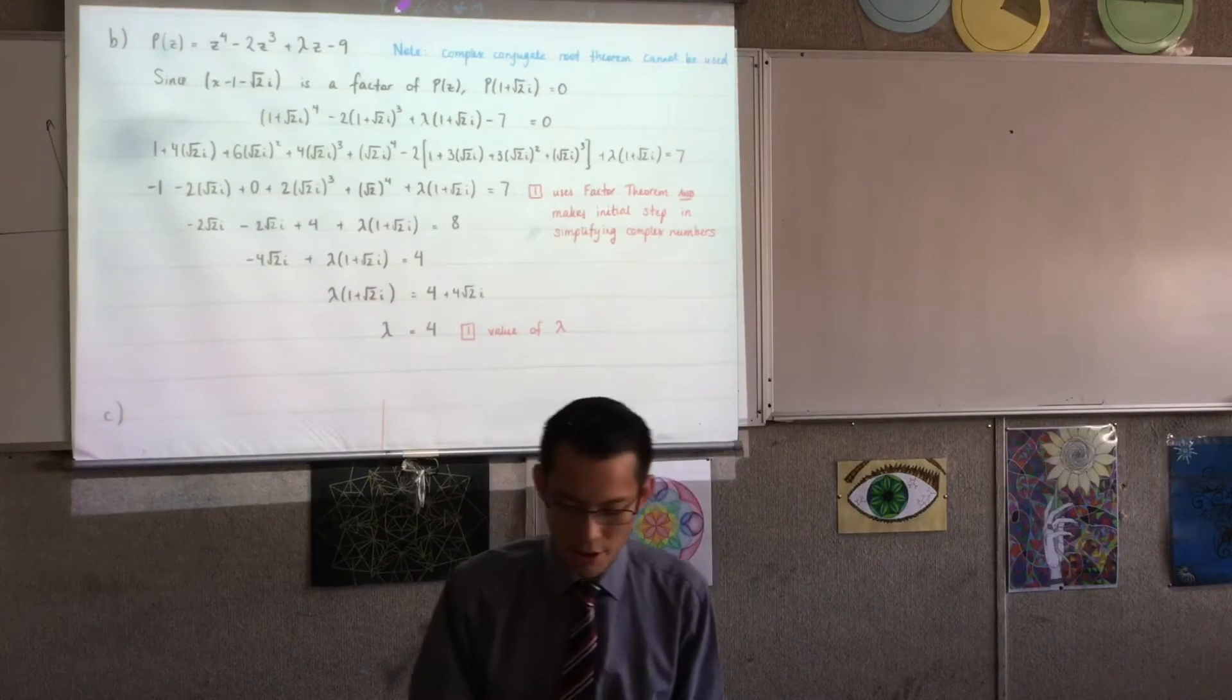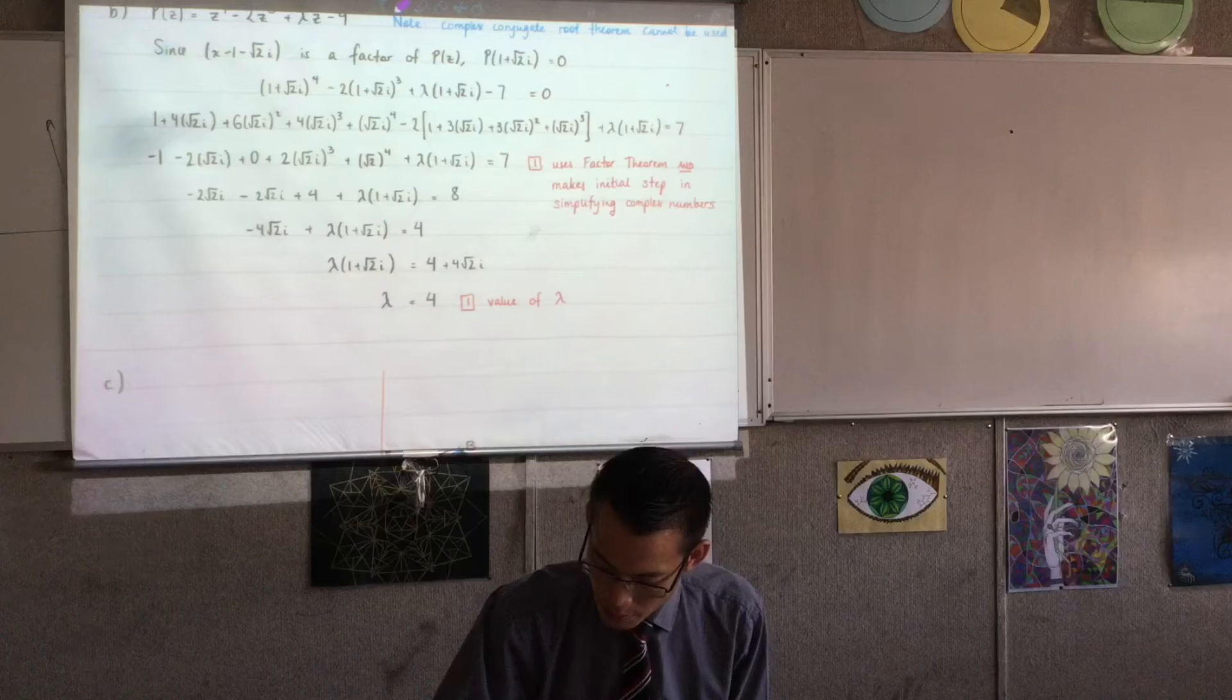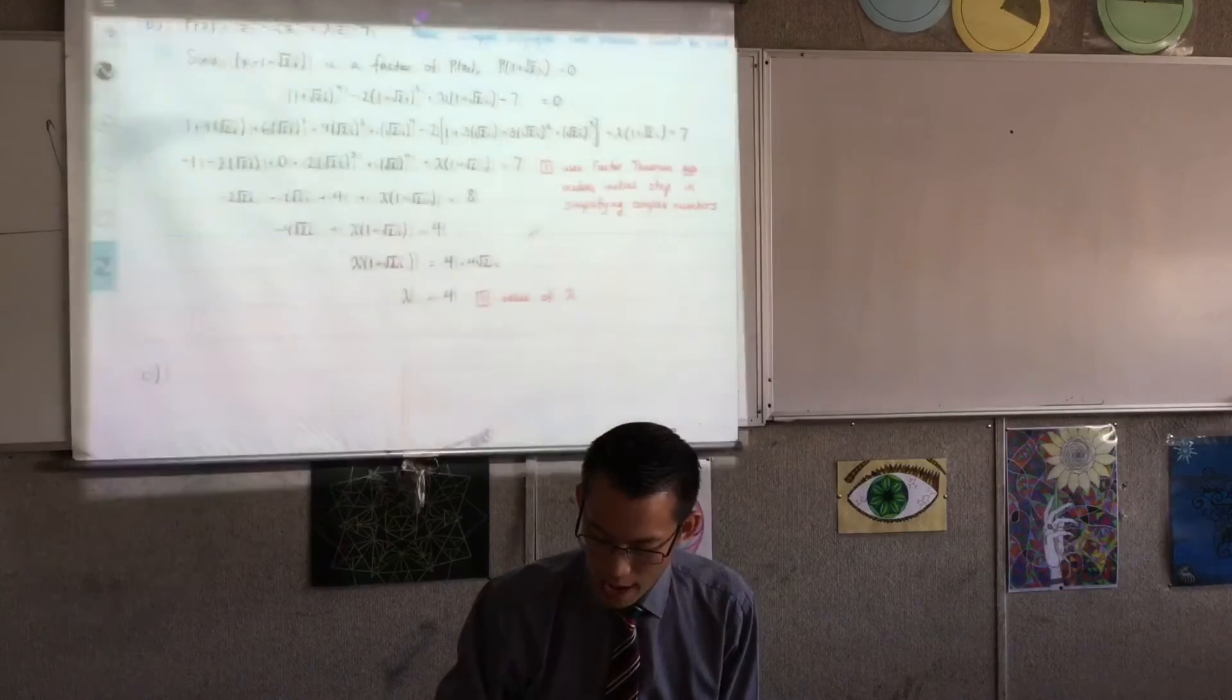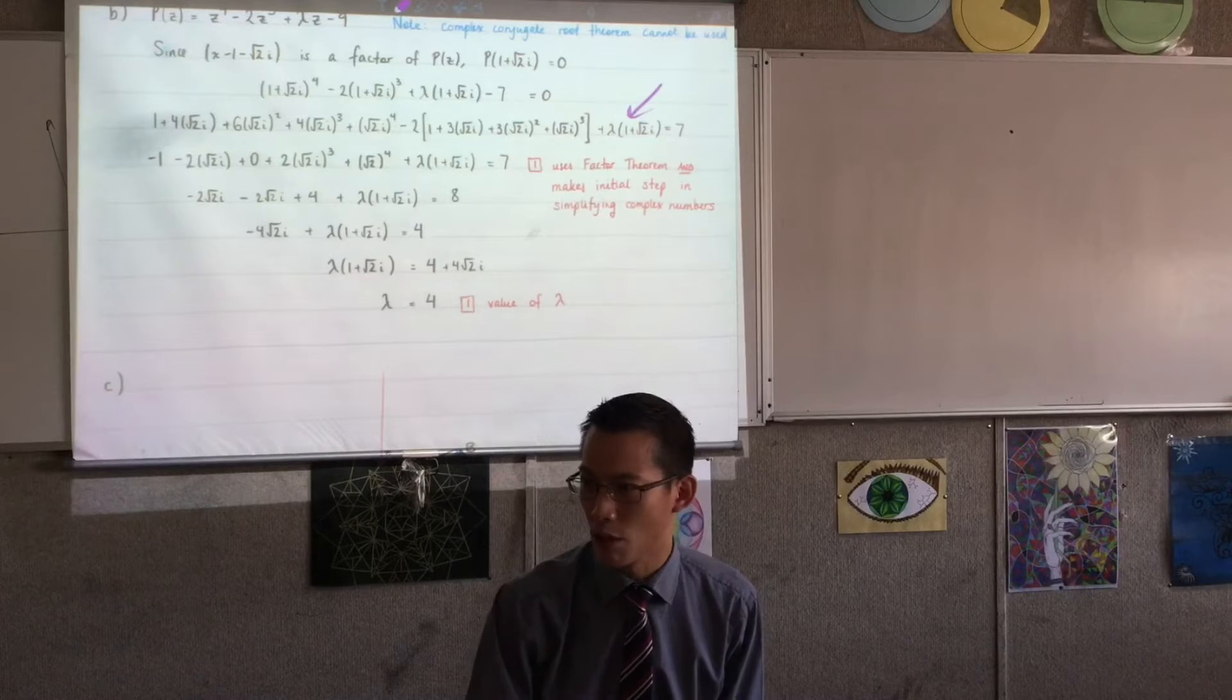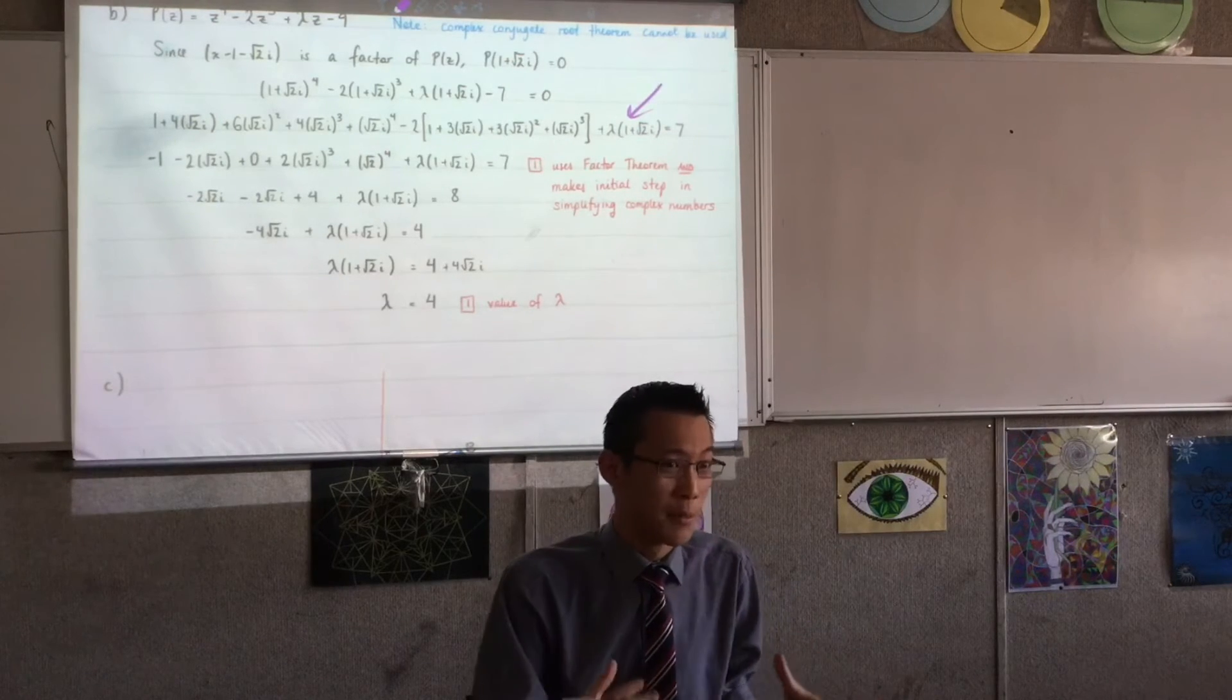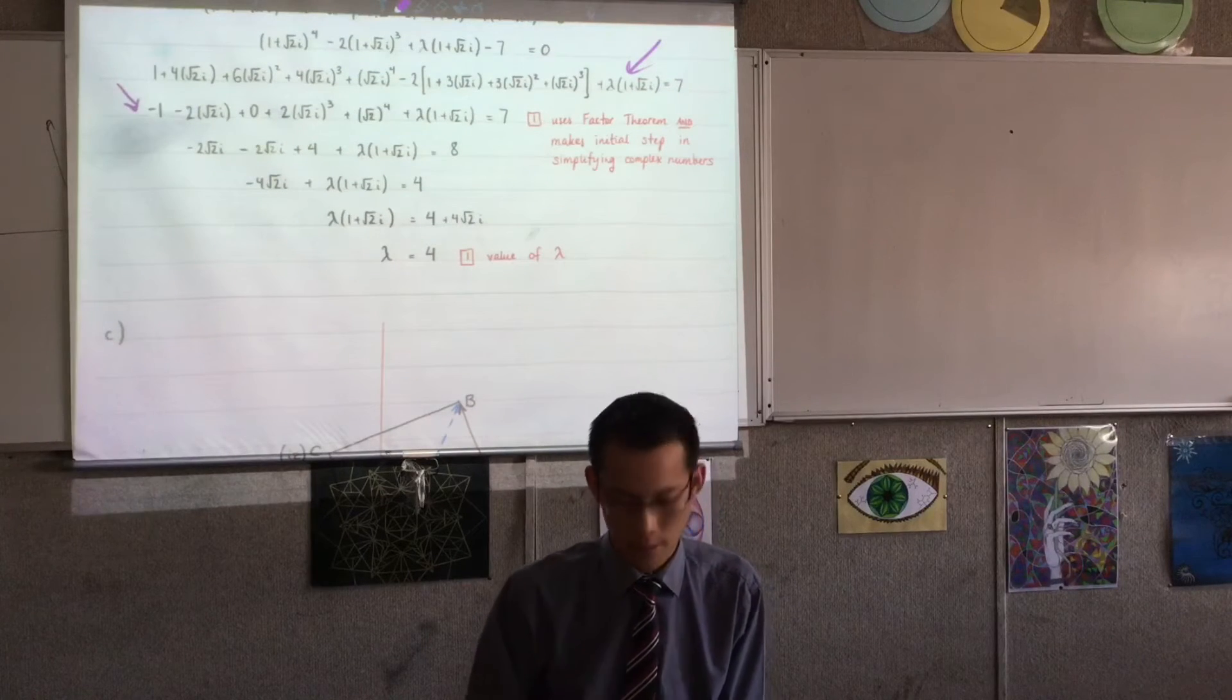That's why you can't. And that's why I hope you went through the derivation of the complex conjugate root theorem. It's like four lines. But the mechanism depends on the fact that the coefficients are real. If it doesn't, then you can't use it. You had to use the factor theorem and make some step in simplifying the complex numbers.